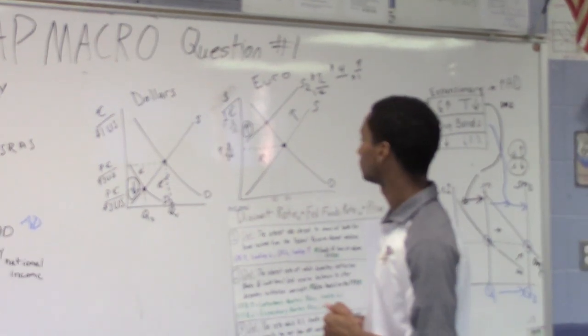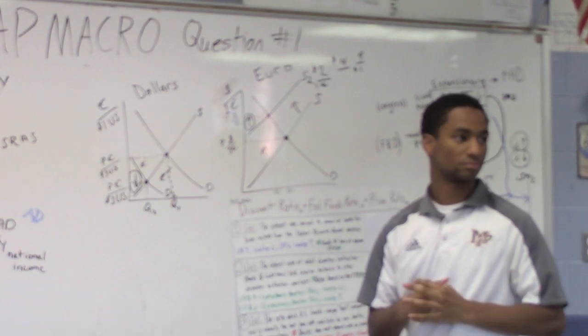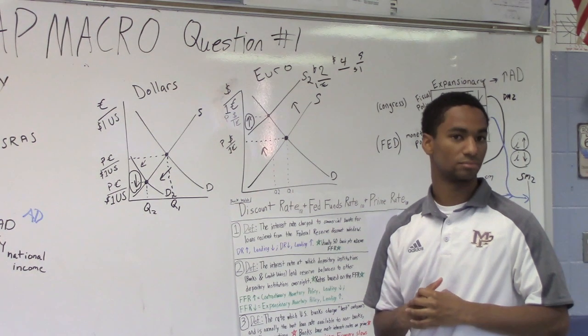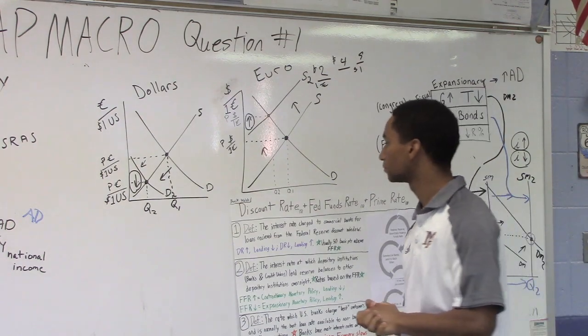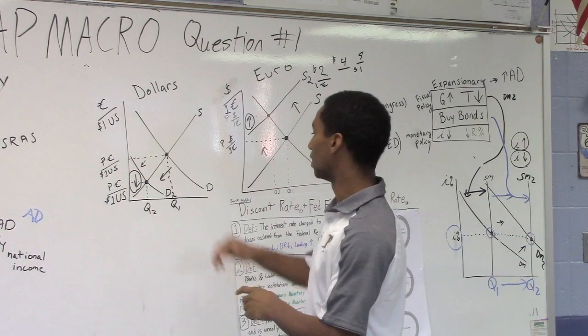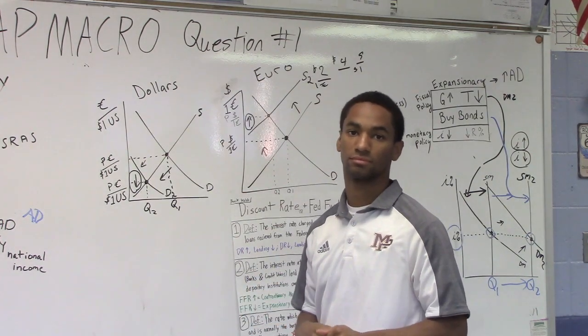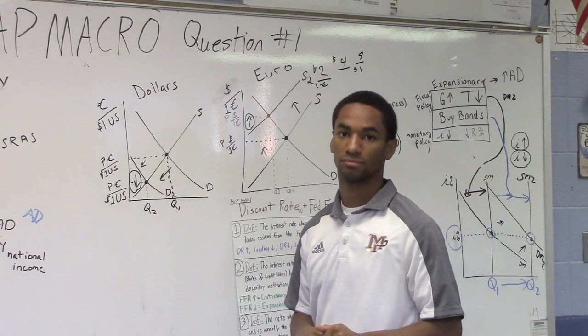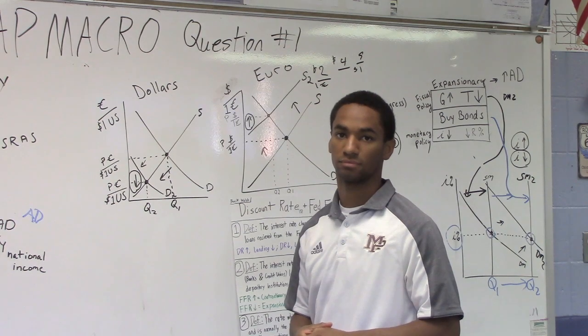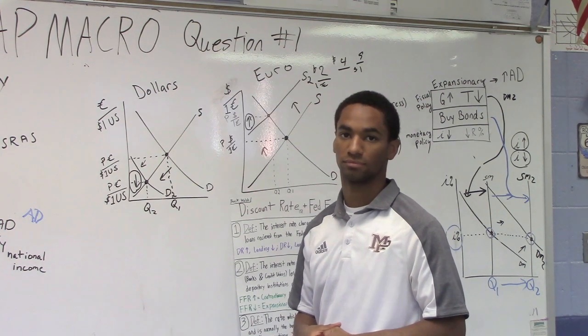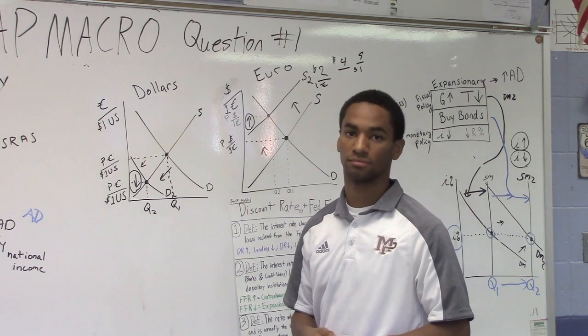Draw a correctly labeled graph of the foreign exchange market for dollars and show the effect of the decrease in demand for dollars on the exchange rate for dollars. Good job. You already did that. But if that's where it starts, could you point to the decrease in demand for dollars? Yeah. They actually, in the question, told you there was a decrease in demand for dollars. And I hope everybody out there in the country and in the world understands that, even if they didn't say that, you understand why there's a decrease in demand for the U.S. dollars, which would cause the U.S. dollars to depreciate.